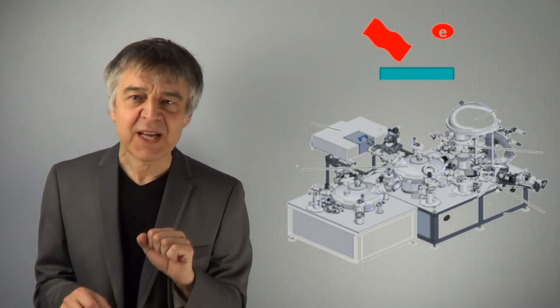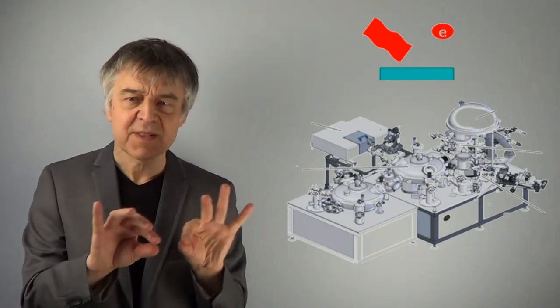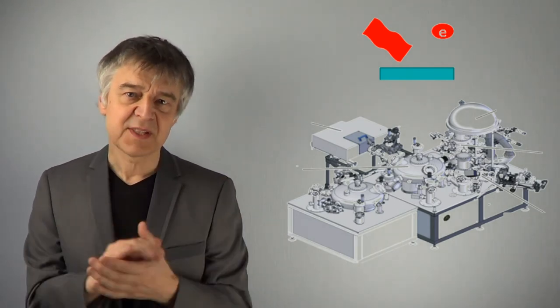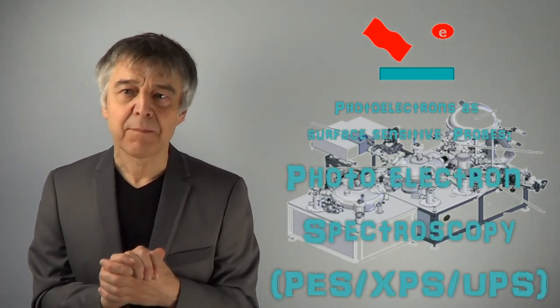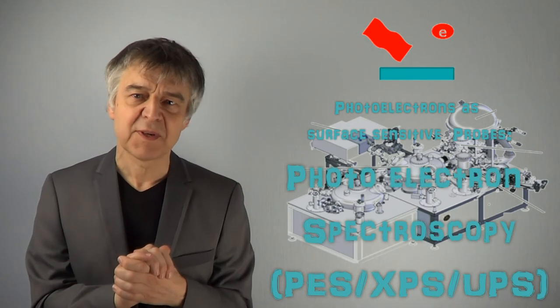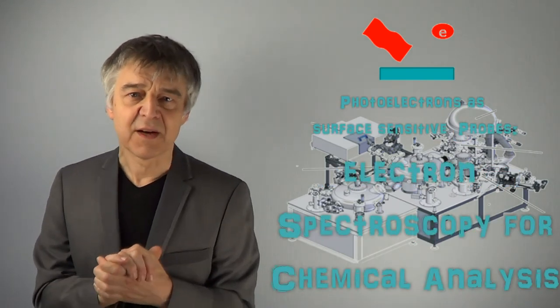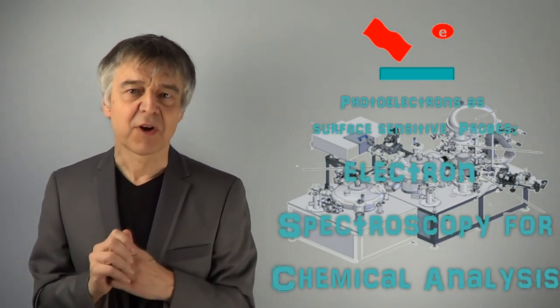As the photoelectrons are emitted from a small sample depth, the method is surface-sensitive. This method is either abbreviated by PES for photoelectron spectroscopy or by ESCA for electron spectroscopy for chemical analysis.